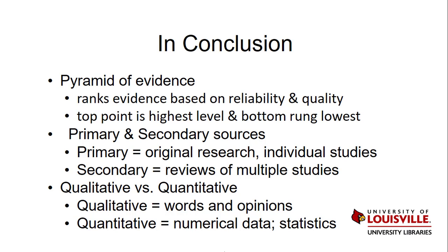Next, we discussed primary and secondary sources. Primary sources are original research articles and papers. Secondary sources are compilations of multiple studies or original research on a given topic. A randomized controlled trial is an example of a primary resource. A systematic review that analyzes numerous randomized controlled trials is an example of a secondary resource. Finally, we discussed qualitative versus quantitative research. The simplest explanation is that qualitative research uses words and opinions and is subjective, while quantitative research uses numerical data and is objective.